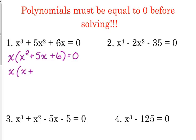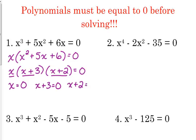3 times 2 is 6. 3 plus 2 is 5. So, now that this is fully factored, just like with quadratics, we want to set all of our factors equal to zero. So x is equal to zero, x plus 3 is equal to zero, and x plus 2 is equal to zero.